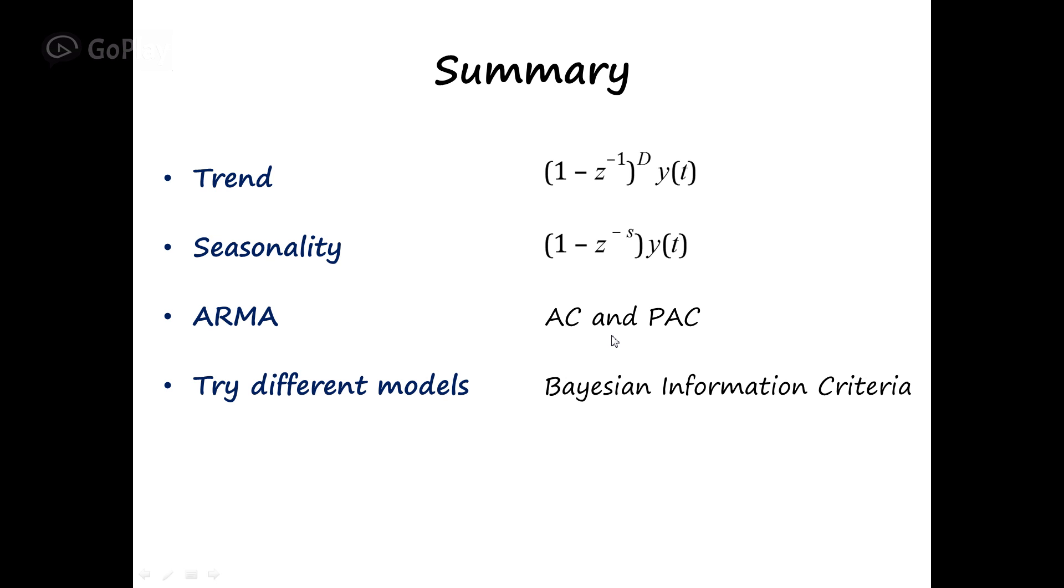Sometimes the system is complicated, and you need to try different models and choose one of them. There is a criteria in the literature called Bayesian information criteria. If you're not sure about what type of model you are working with, you can try to build different models, and then you can choose the one with the smallest Bayesian information criteria.